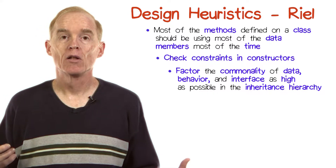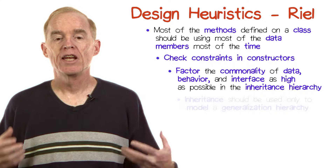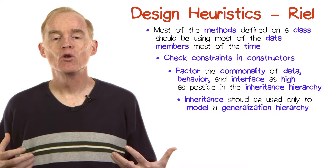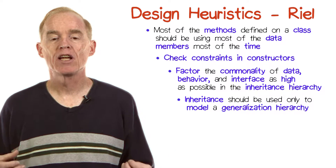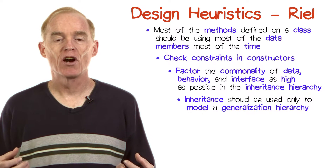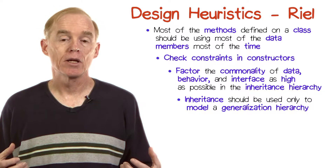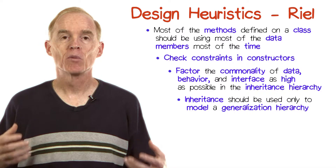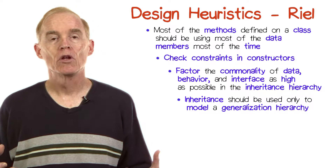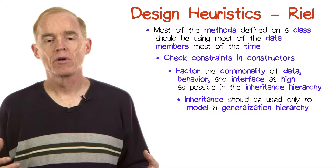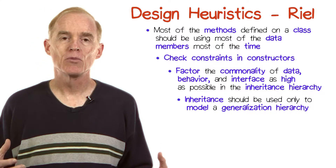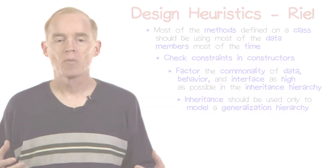Here's another Rael heuristic: inheritance should be used only to model a generalization hierarchy and not to facilitate the sharing of implementation code. We've heard this one many times in this course.